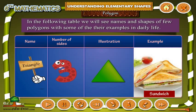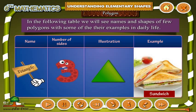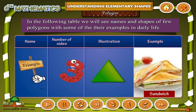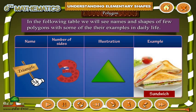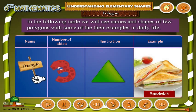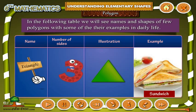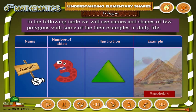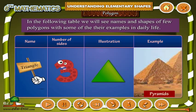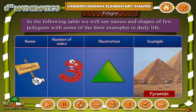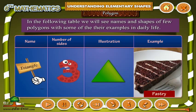Triangle — number of sides is 3. Illustration, for example: Sandwich, Pyramids, Pastry.